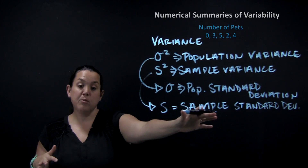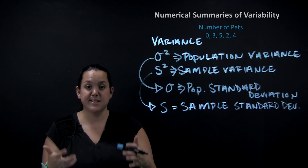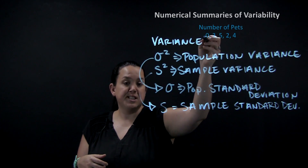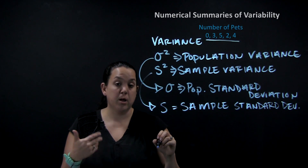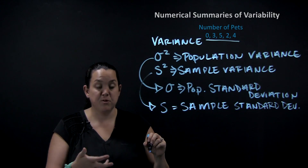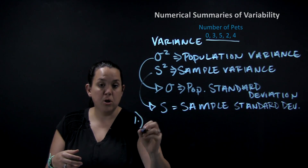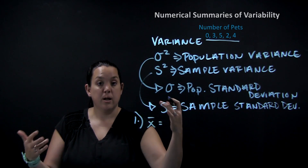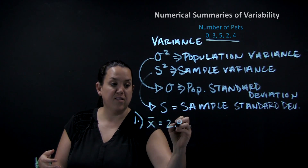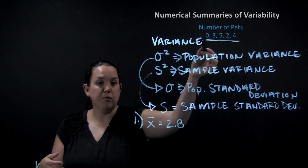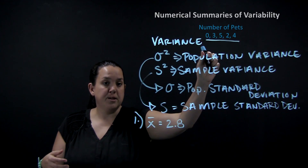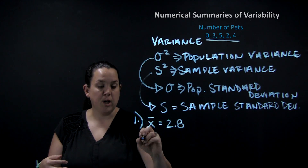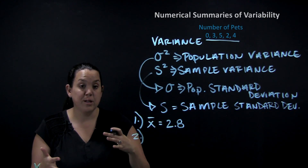Standard deviation is the one we're going to focus on today because it has a nice definition: it's the average distance that values fall from the mean. We're going to use a dataset looking at number of pets, where we calculated the sample mean a couple of videos ago. The first thing you have to do is know what the mean is — we calculated the sample mean x-bar to be 2.8.